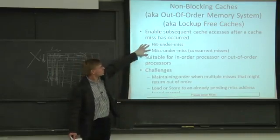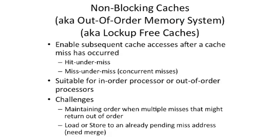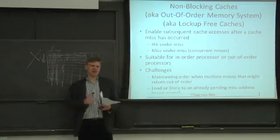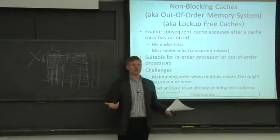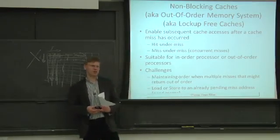Two major things this allows you to do: it allows you to have a cache hit under a miss, and it allows you to have a miss under a miss. What do I mean by a miss under a miss? You do a load to some address, it takes a cache miss, but you keep executing your program and do another load that also takes a cache miss. You're able to process both of these if you have a non-blocking cache which allows miss under miss.